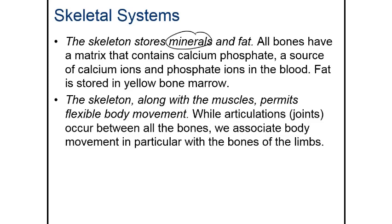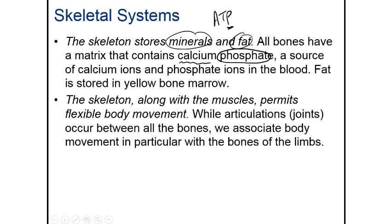The skeletal system also stores minerals and fat. In addition to calcium, which is the one most people are familiar with, bones also store phosphate. We need phosphate for various reasons — for example, energy is ATP, adenosine triphosphate, and that contains the same kind of phosphate stored in your bones. Lastly, the skeleton along with muscles allows flexible body movement. It is the articulations, or joints, created by the bones that allow us to move, while the muscles do the pulling.